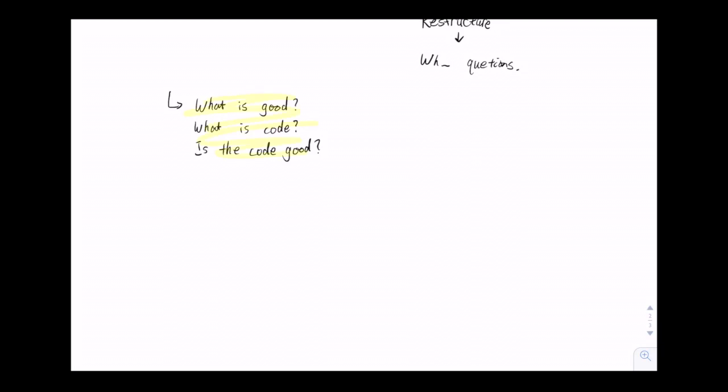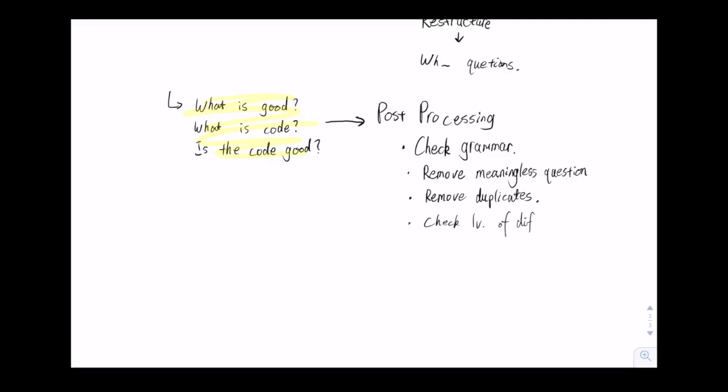For the post-processing stage of the question generation, we'll check the grammar of the question, remove meaningless questions by removing duplicates, such as if two identical questions are generated from two different sentences, they will likely be meaningless, such as the question 'what is good', and also we'll check the level of difficulty.